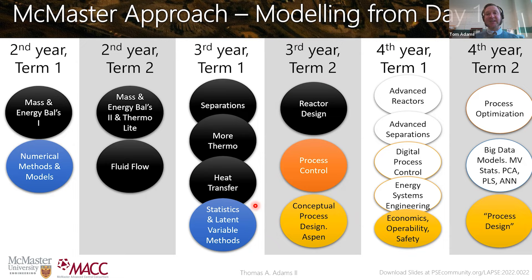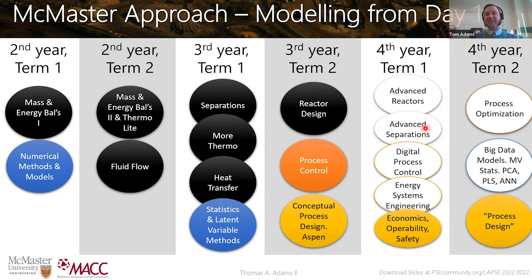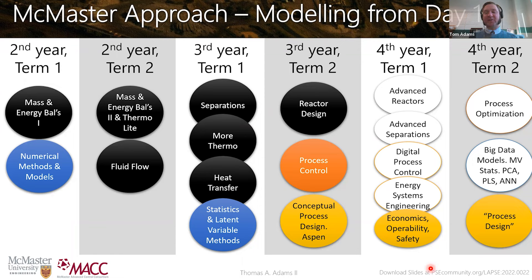By the time they get to me in the second term of third year, they've done modeling integrated with all their basics. They haven't done a lot of Aspen — just a few chapters from the book in individual courses — but they've done equation-based models in MATLAB. This is our third year course, which most programs do in fourth year. In fourth year, they have advanced separations, a second controls course, energy systems courses, a second design course focused on economics, operability, and safety, and then in the final term, optimization and machine learning, followed by the true process design capstone.